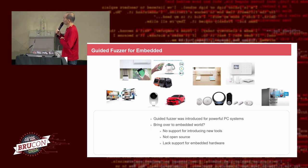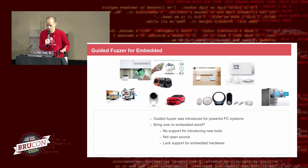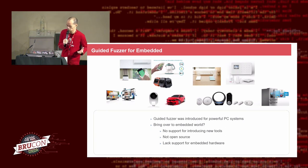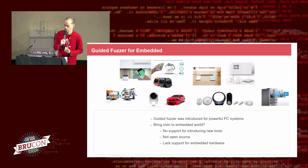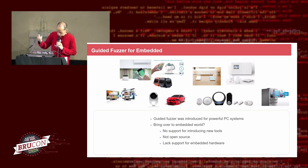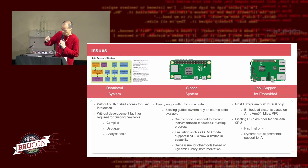Now the question is: if you want to bring coverage-guided fuzzing to embedded systems, how can we do that? That is not very easy and there are many issues. First, embedded systems have very poor support for introducing new tools. Second, embedded systems in many cases are not open source — we don't have source code. And third, there is poor support for embedded hardware on existing guided fuzzers.